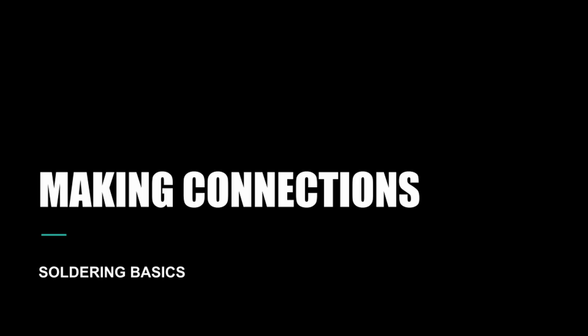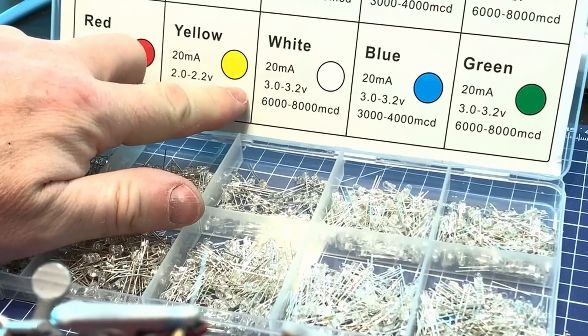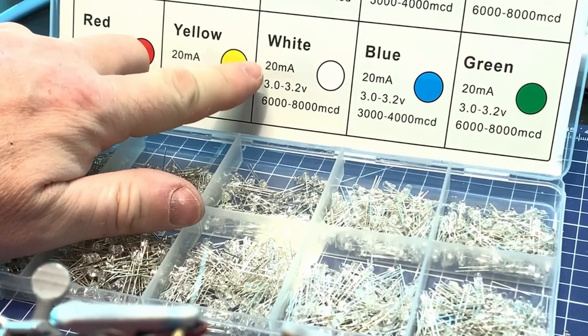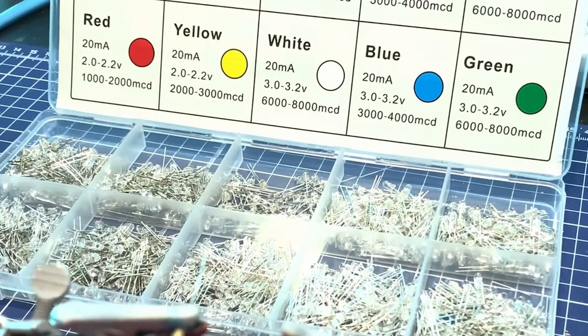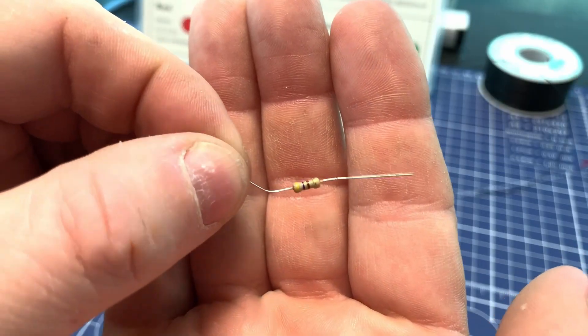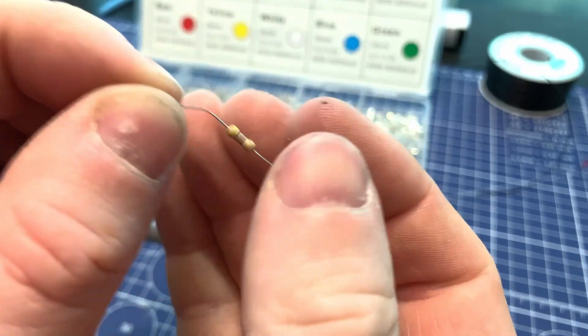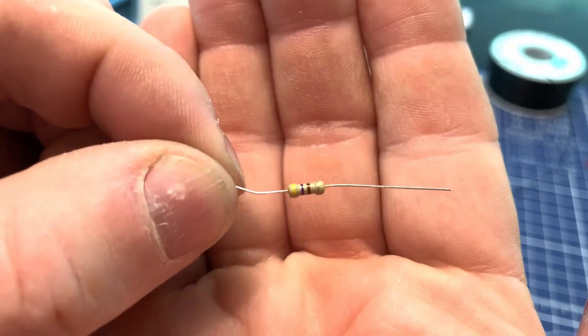Once you've got LEDs and resistors sorted, it's time to actually connect them. Soldering is the most reliable method, and it's easier than you might think. The white LEDs I'm using run at 3 or 3.2 volts, and I'll be using a 9 or 12 volt power supply, and we'll be using a 470 ohm resistor to step that down.